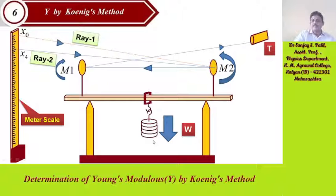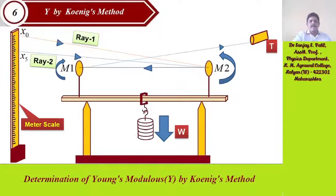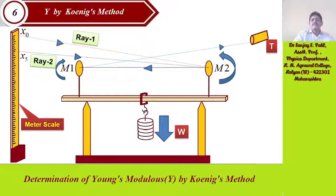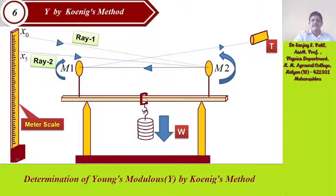This is observed with the help of the telescope placed at the right-hand side of the apparatus. When the fifth weight is applied, the reading shifts from x0 to x5. Ray 2 goes to mirror M2, reflects back to mirror M1, and then to the telescope. This happens due to bending action of both mirror M2 and mirror M1, and there is bending at the center of the beam.